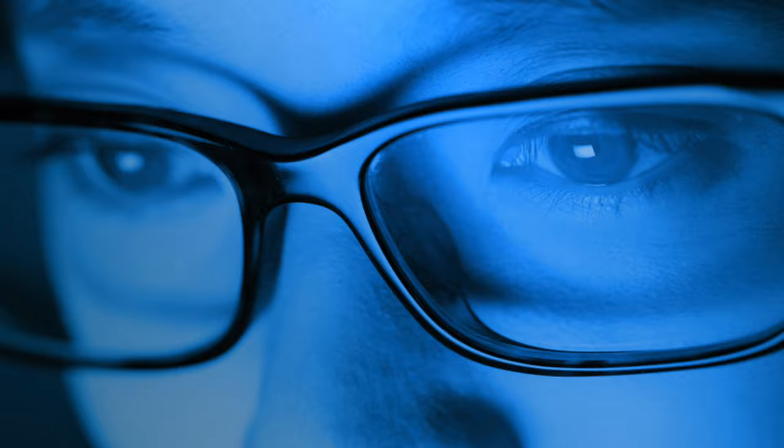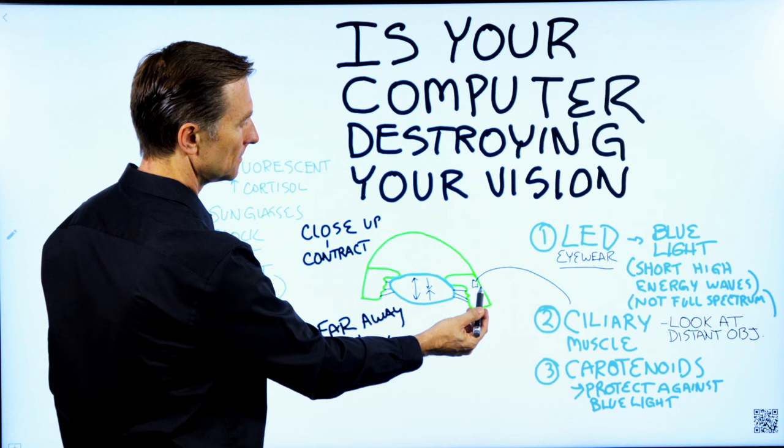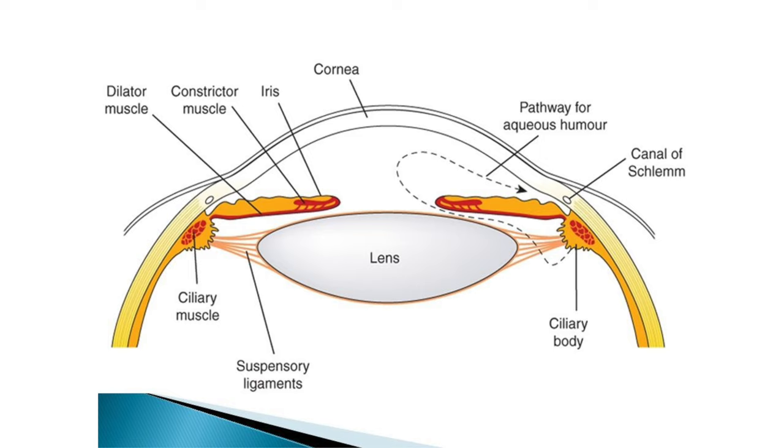The next point is the ciliary muscle of the eye. So here's the front of the eye right here, and here's the lens. There's a little muscle called the ciliary muscle. They're on both sides that help to shape the lens to help you focus. So you can focus in near or far.